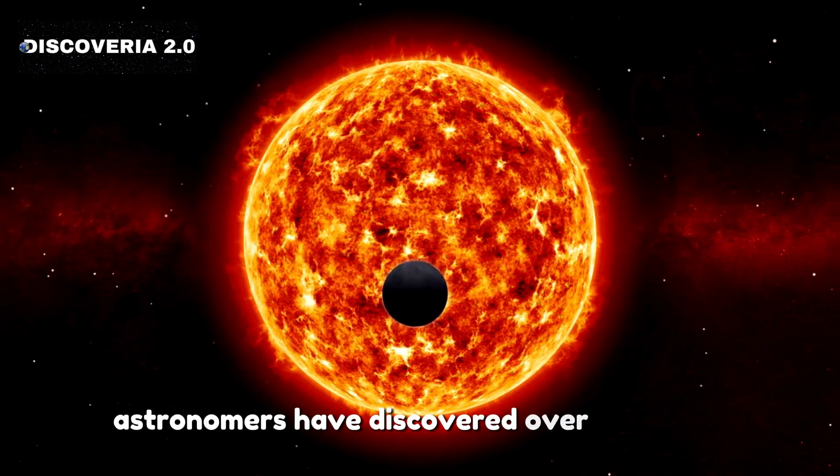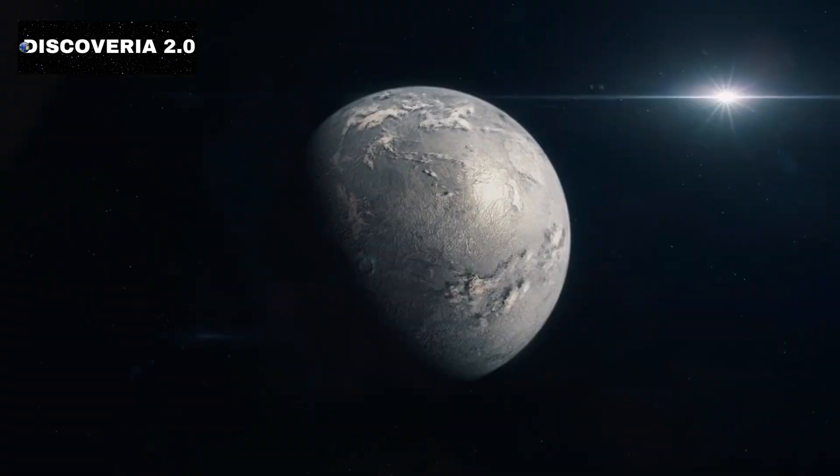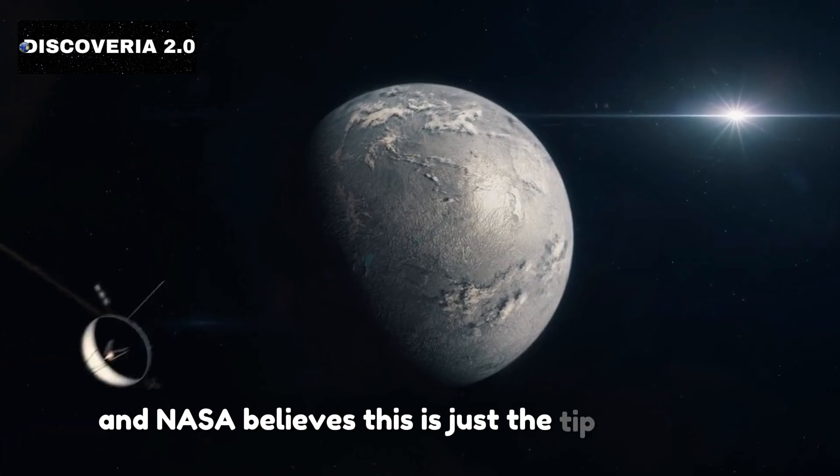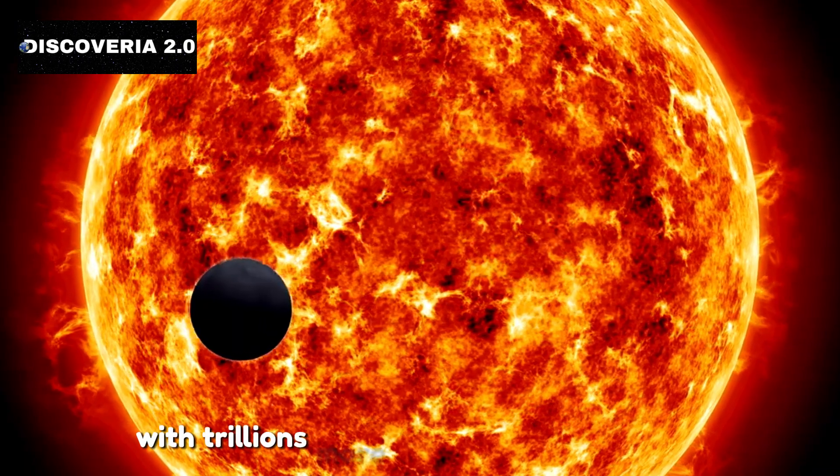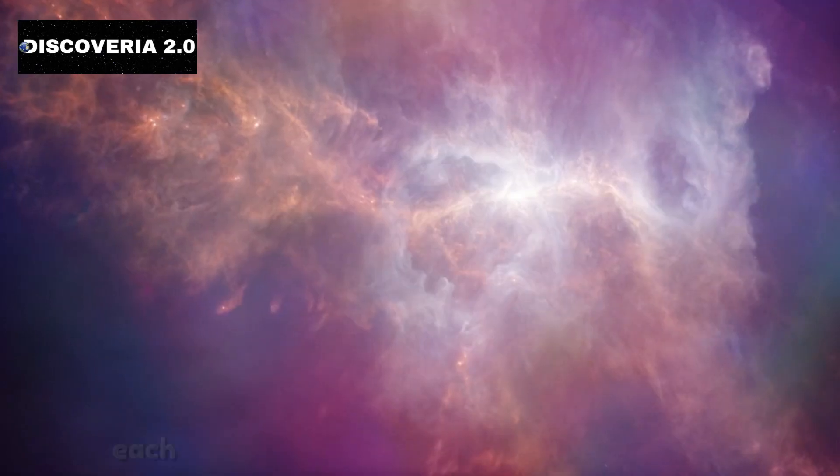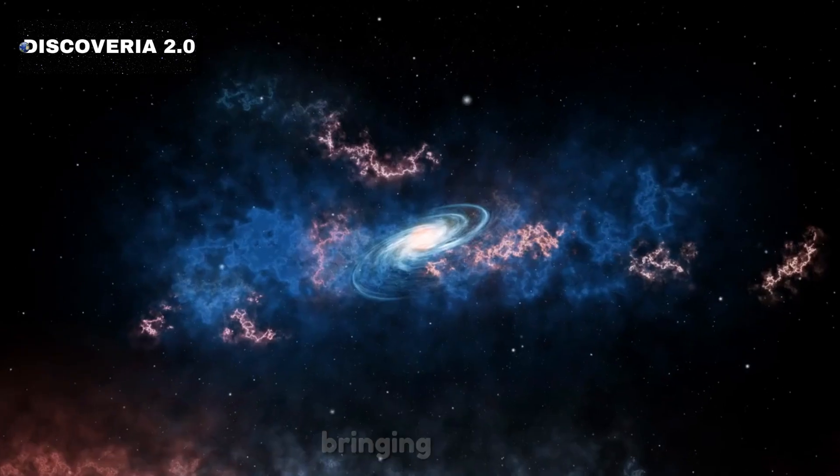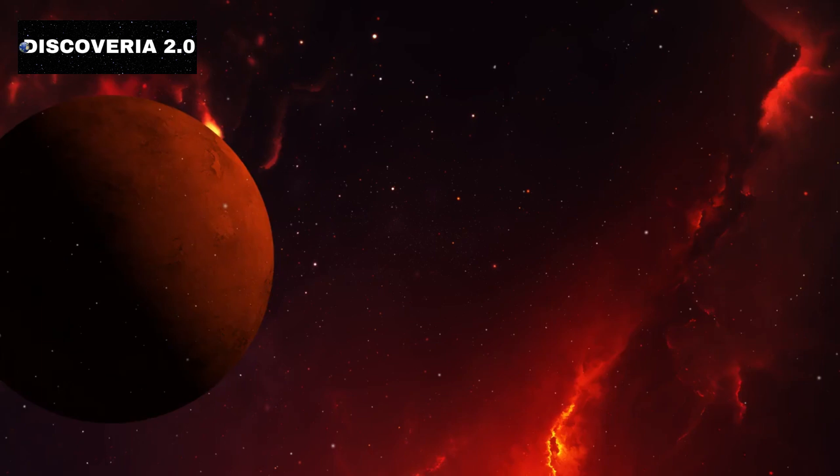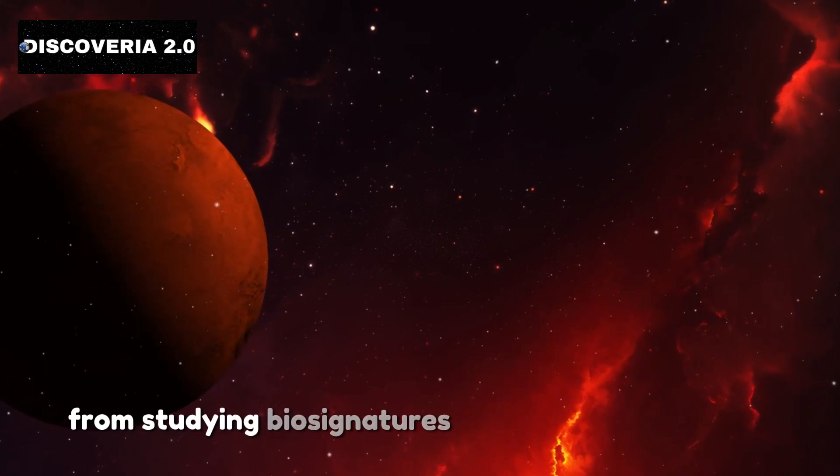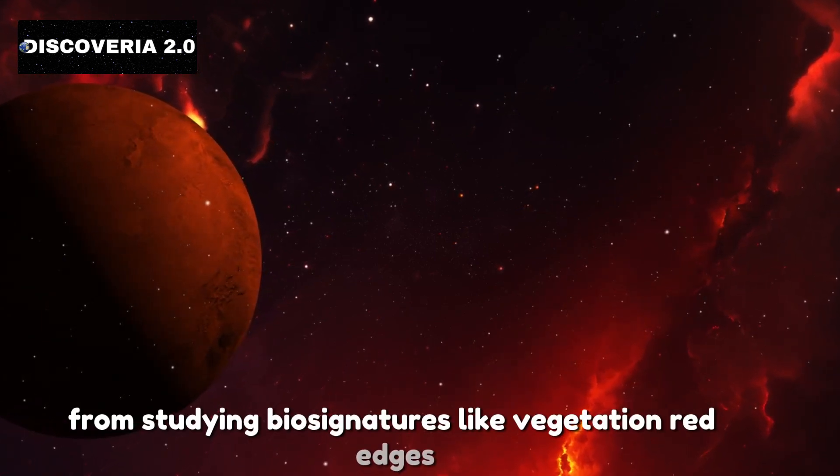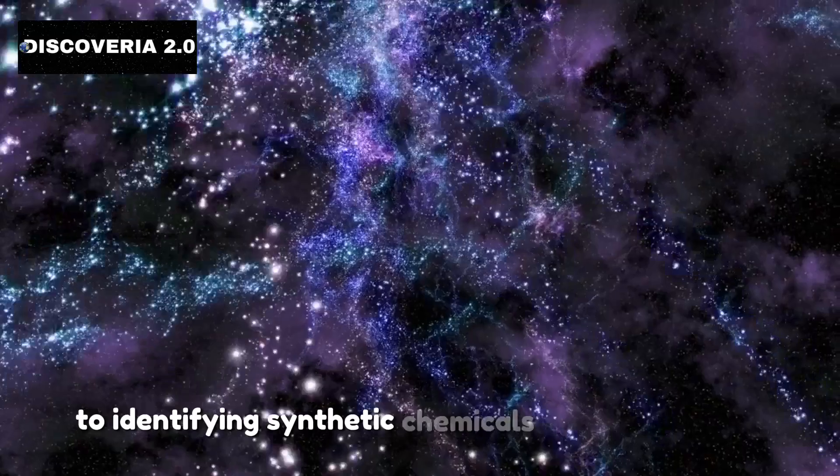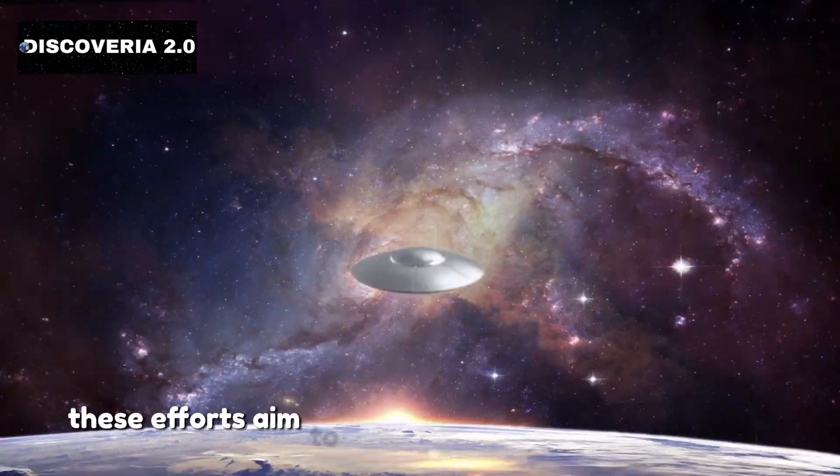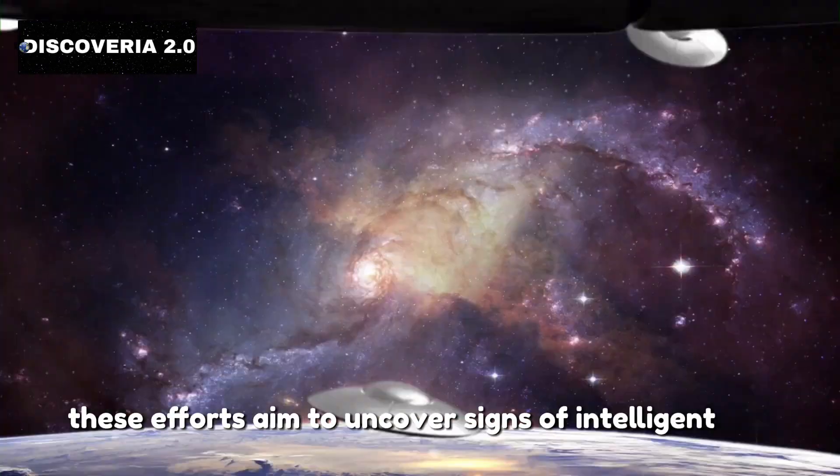Astronomers have discovered over 4,000 exoplanets, and NASA believes this is just the tip of the iceberg, with trillions more waiting to be found. Each new discovery deepens our curiosity, bringing us closer to answering some of the universe's greatest mysteries. From studying biosignatures like vegetation red edges, to identifying synthetic chemicals in planetary atmospheres, these efforts aim to uncover signs of intelligent life.